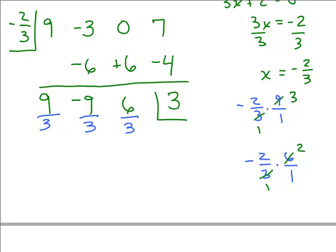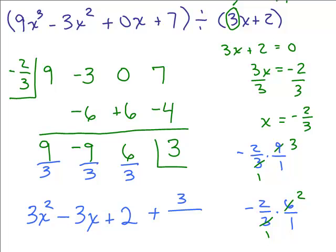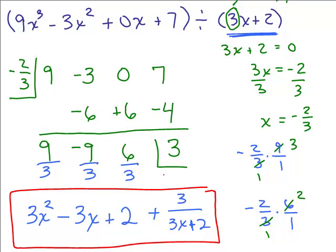So the x squared term is 9/3 = 3x squared, the x term is negative 9/3 = minus 3x, and the constant is 6/3 = plus 2, plus the remainder 3 over what we divided by, which is 3x plus 2. So the final answer is 3x squared minus 3x plus 2 plus 3 over (3x plus 2).